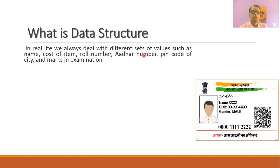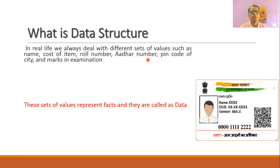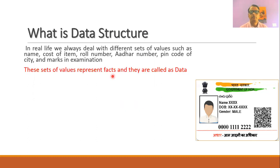These sets of values can include the name of a student or a person, the cost of an item, a roll number assigned to every student, an Aadhaar number for every person in India, a pin code for every city, and marks scored by a student in an examination. So whenever we are dealing with different situations, we are dealing with different sets of values. These sets of values represent facts, and these facts are called data.